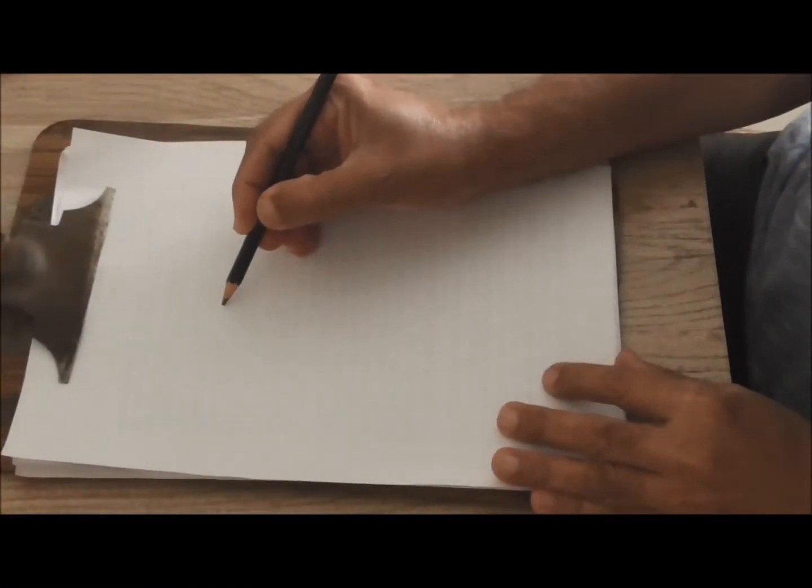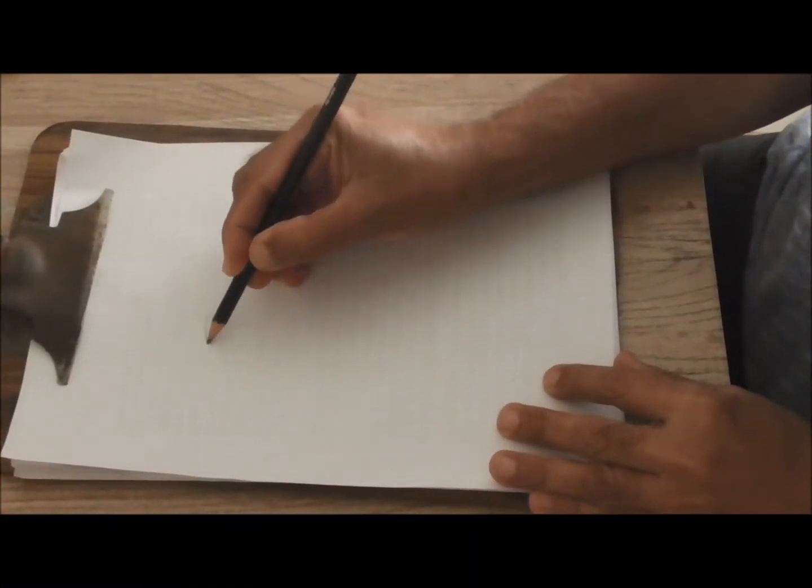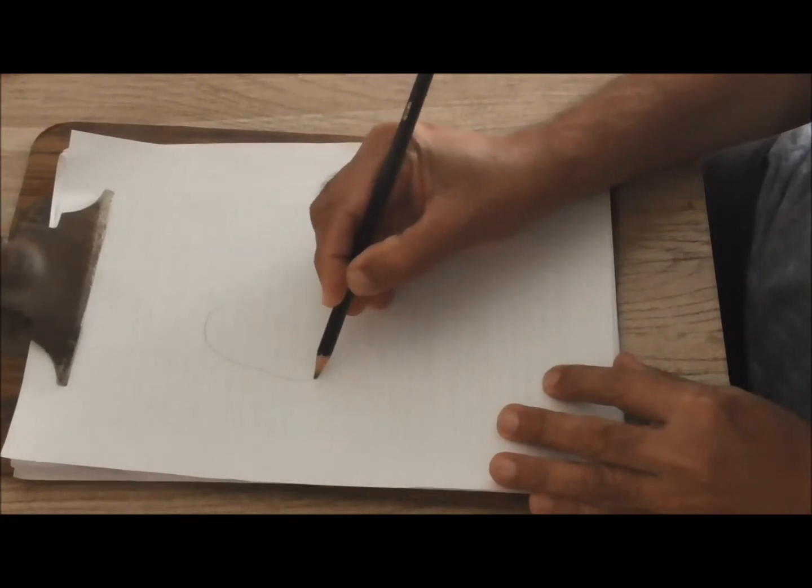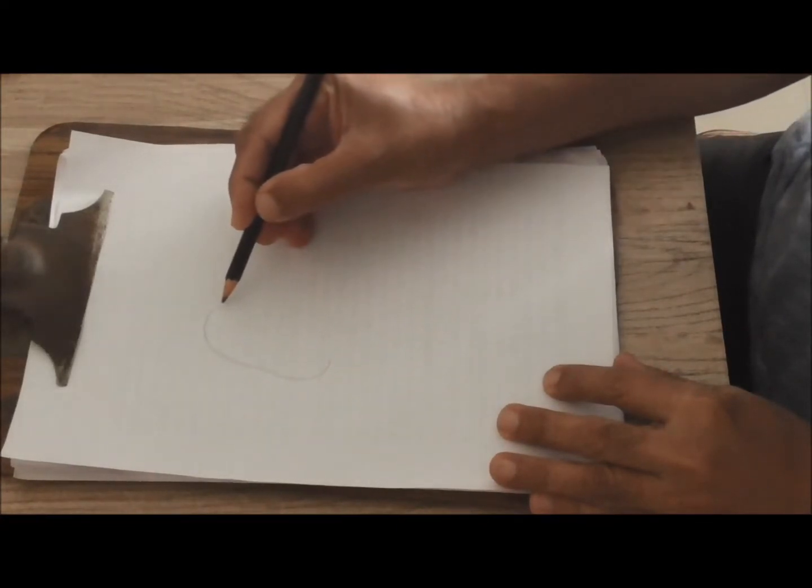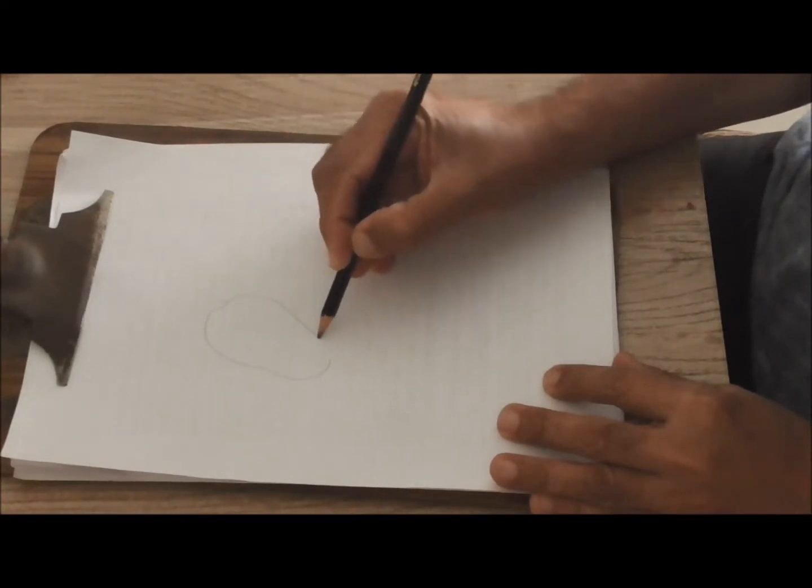Now we are drawing the right atrium. This will be part of the ventricle.